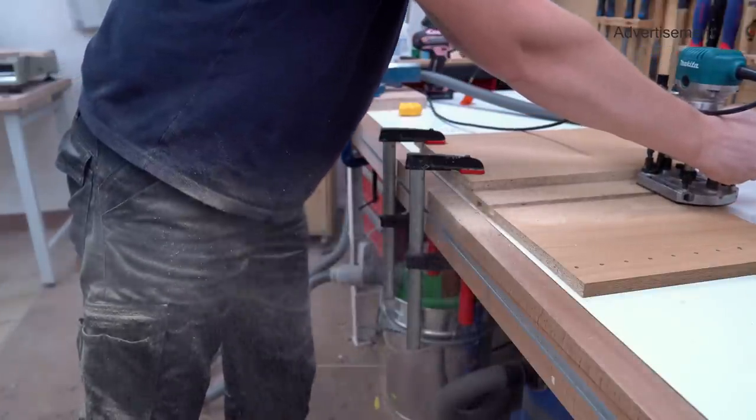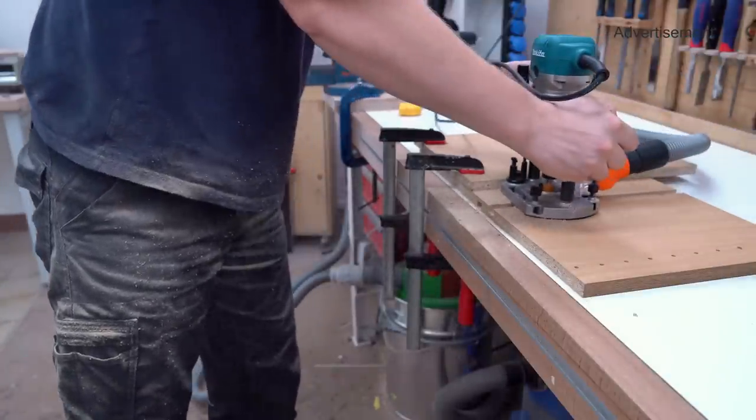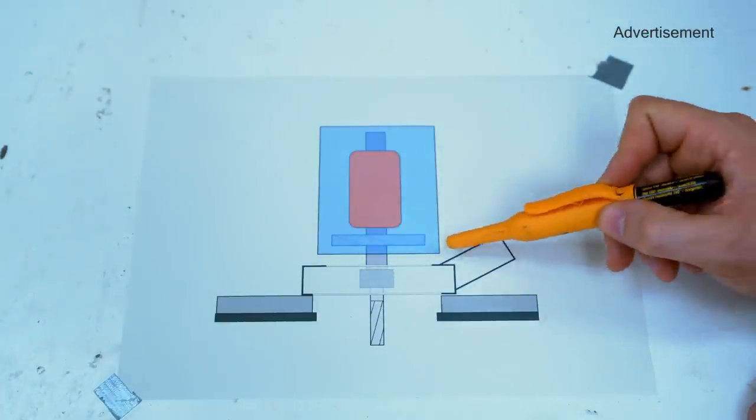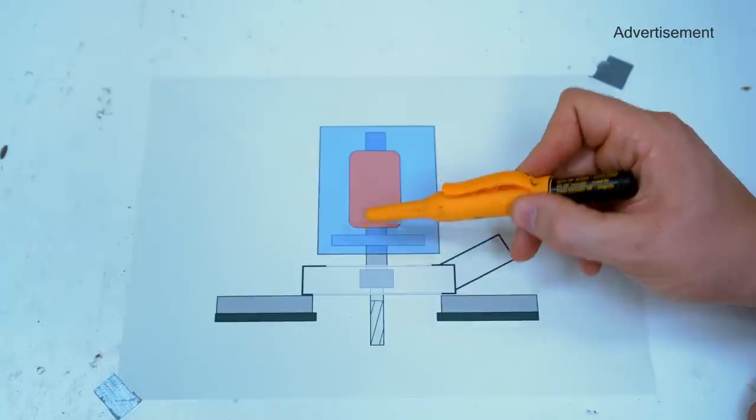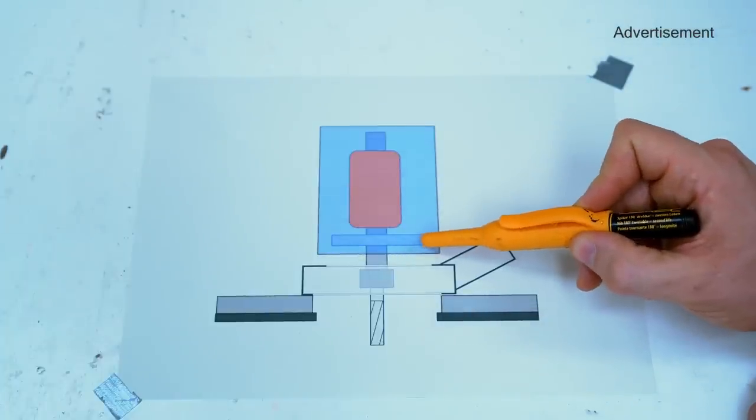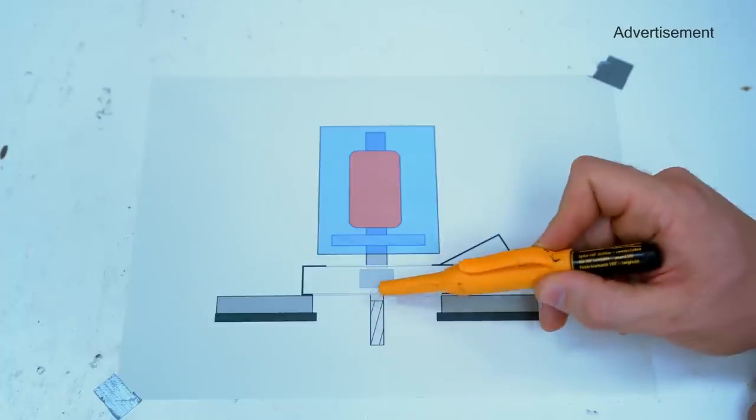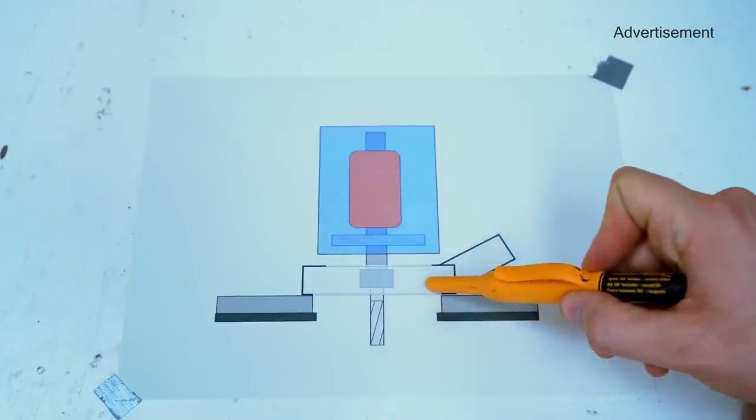So what the heck is going on here? This is a simplified cut through the router. This is the router motor with its rotor and its cooling fan, and here is the collet chuck and here is the router cutter and that is our dust collection shroud.